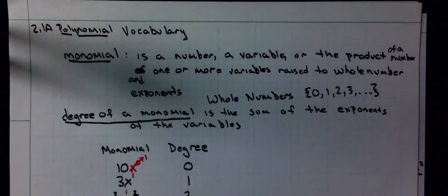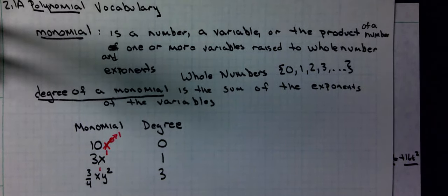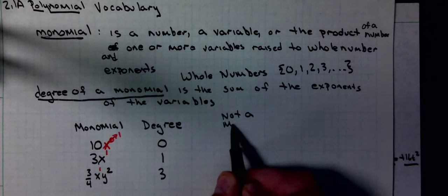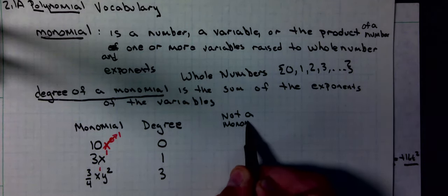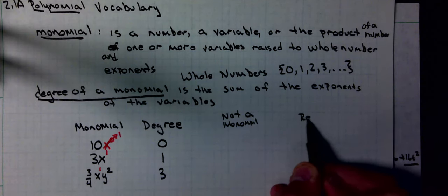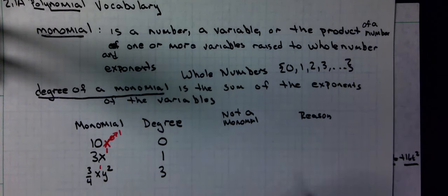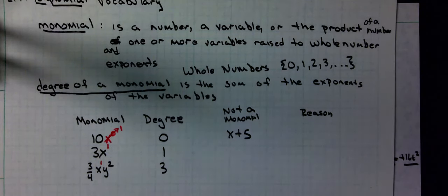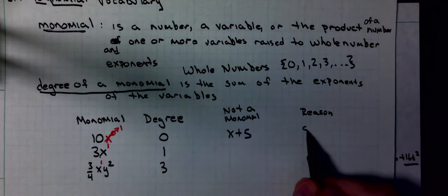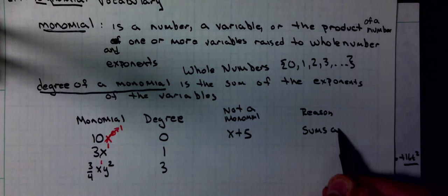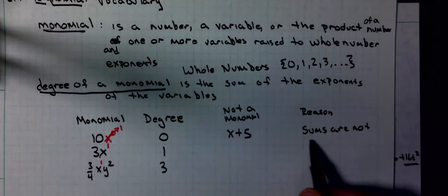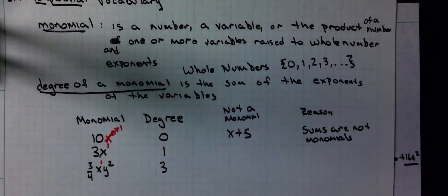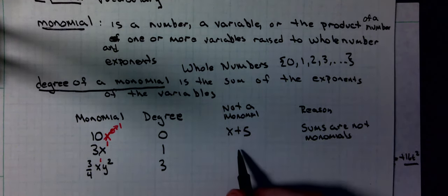Let's do a couple non-monomials. x plus 5. Sums are not monomials. That plus sign means it's not a monomial.